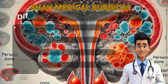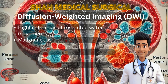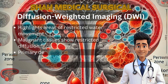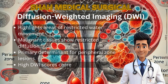Diffusion-weighted imaging focuses on restricted water movement in tissues, a common feature of malignant areas. This technique is particularly important for identifying lesions in the peripheral zone. Higher DWI scores often correlate with greater cancer severity.